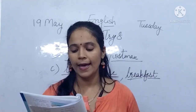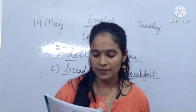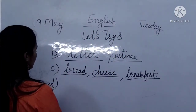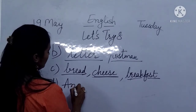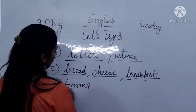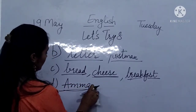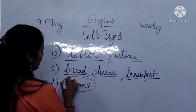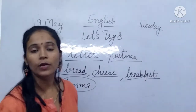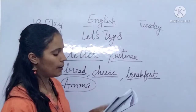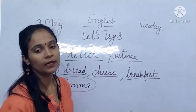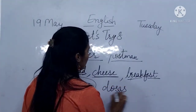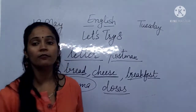Sentence D: Amma has made crispy dosas. Amma — a specific name has come, so it is a proper noun. And dosas — dosas kya ho gya? Common naming word.